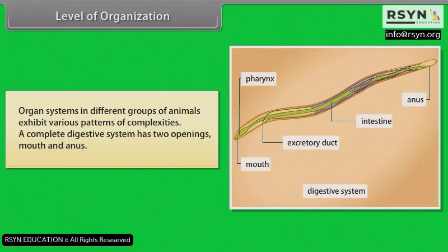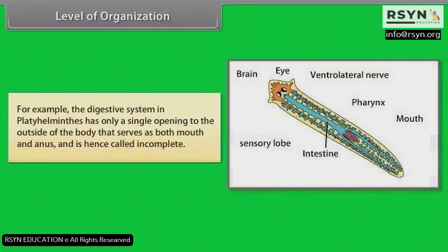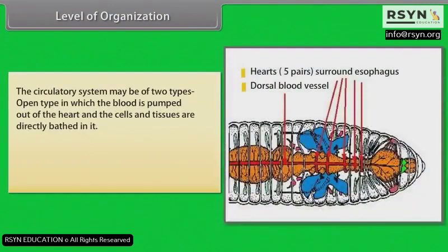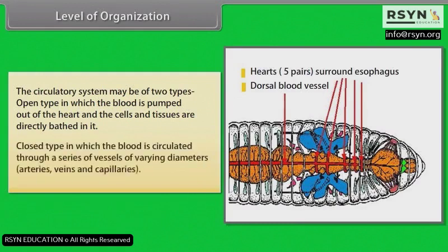A complete digestive system has two openings — mouth and anus. For example, the digestive system in platyhelminthes has only a single opening to the outside of the body that serves as both mouth and anus, and is hence called incomplete. The circulatory system may be of two types: open type, in which blood is pumped out of the heart and the cells and tissues are directly bathed in it; and closed type, in which blood is circulated through a series of vessels of varying diameters — arteries, veins and capillaries.